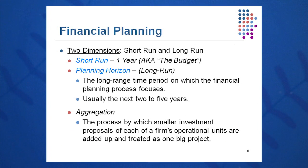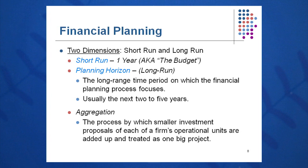Two dimensions of the financial plan: typically you'll do a five-year plan. The first year is called the short run, or the budget. So the short run is one year — the budget. Years two through five are called the planning horizon, or the long run. Long-range planning focuses on years two through five.